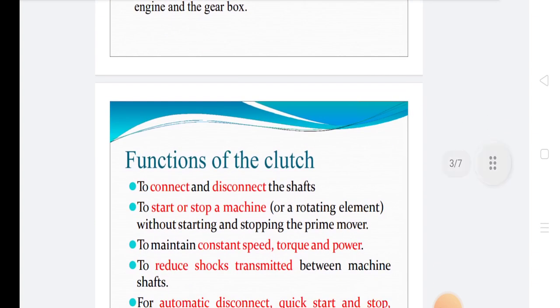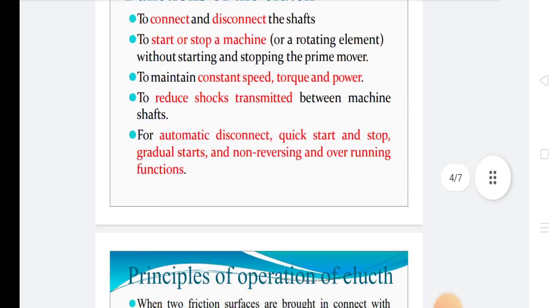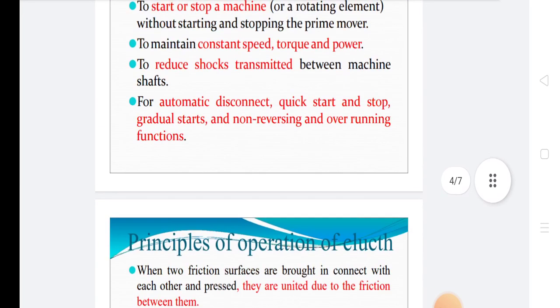Now we discuss the functions of clutch: to connect and disconnect the shafts, to start or stop a machine without starting and stopping the prime mover, to maintain constant speed, torque and power, to reduce shock transmitted between machine and shaft, for automatic disconnect, quick start and stop for gradual starts and non-reversing and overrunning functions.